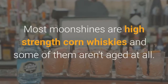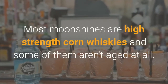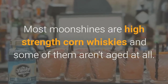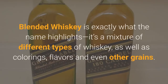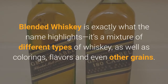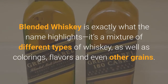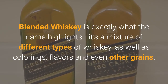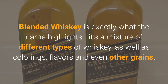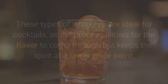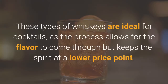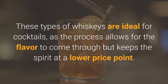Most moonshines are high-strength corn whiskies and some of them aren't aged at all. Blended whiskey is exactly what the name highlights — it's a mixture of different types of whiskey, as well as colourings, flavours and even other grains. These types of whiskies are ideal for cocktails, as the process allows for the flavour to come through but keeps the spirit at a lower price point.